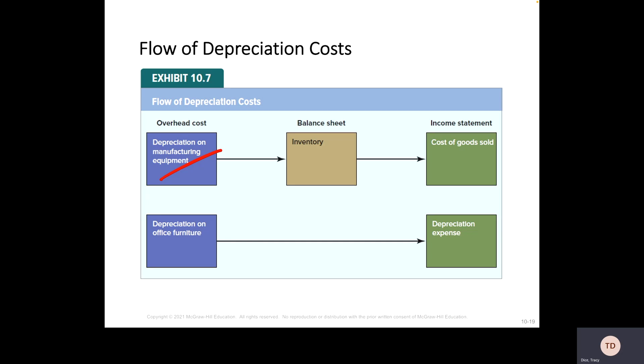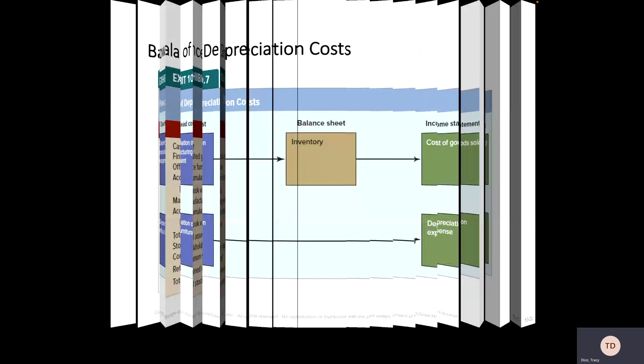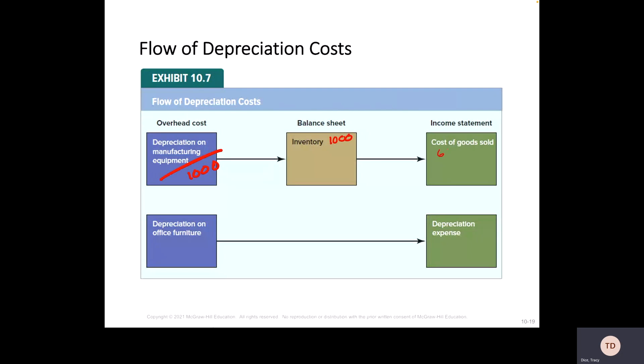You've got that $1,000 of depreciation that we dealt with. We moved it over to inventory and then we had two thirds of it was sold. Two thirds of our inventory was sold. So about $666 of it moved over to the cost of goods sold. Well, we had $333 left still there in our inventory balance. Depreciation of the office furniture goes straight to your income statement as a depreciation expense.